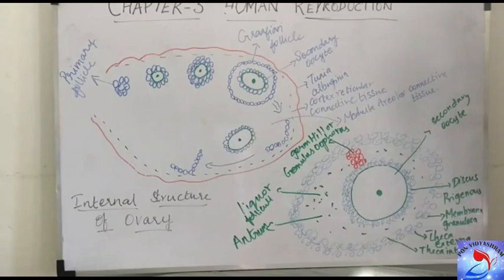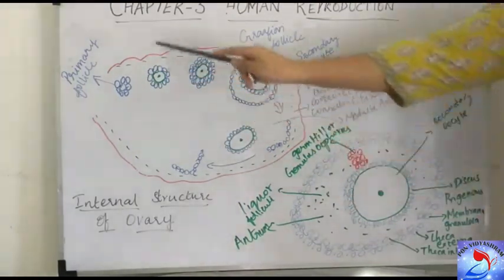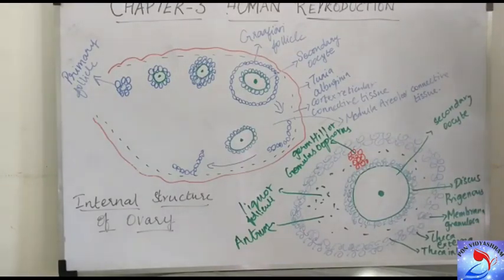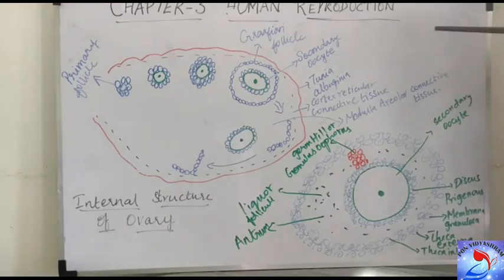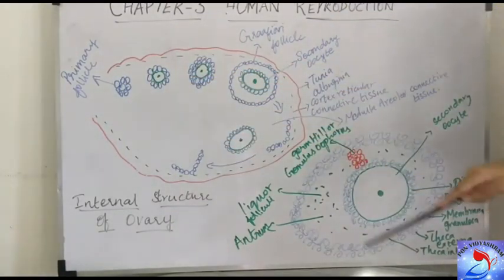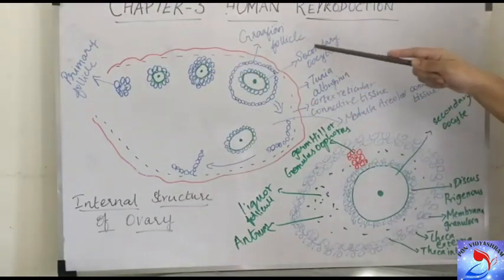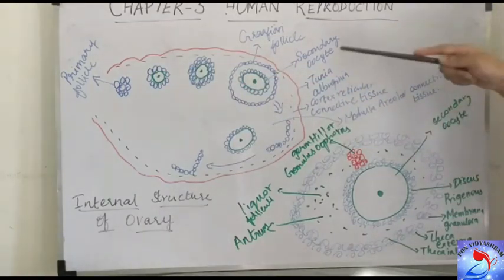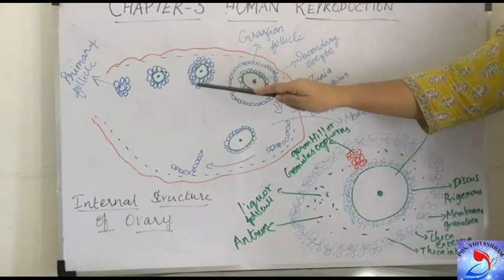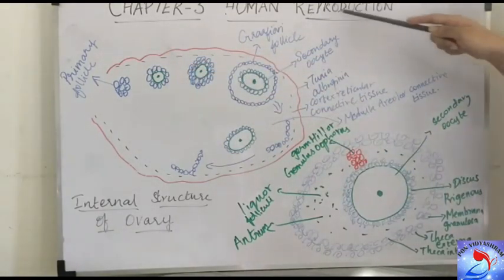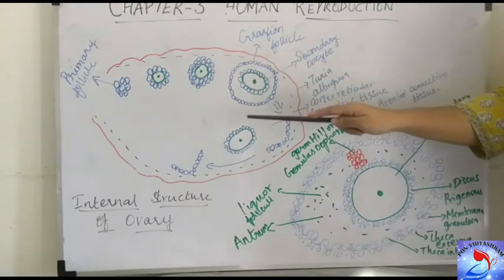The almond-shaped ovary contains follicular cells. Initially, a primary follicle is formed, and since humans are primates with a cyclic menstrual cycle, follicular cells are formed every month. Within the primary follicle, only one cell enlarges and becomes the secondary oocyte — the ovum. When the secondary oocyte is formed, it is surrounded by numerous follicular cells to form the Graafian follicle. So first the primary follicle forms, then the Graafian follicle develops.